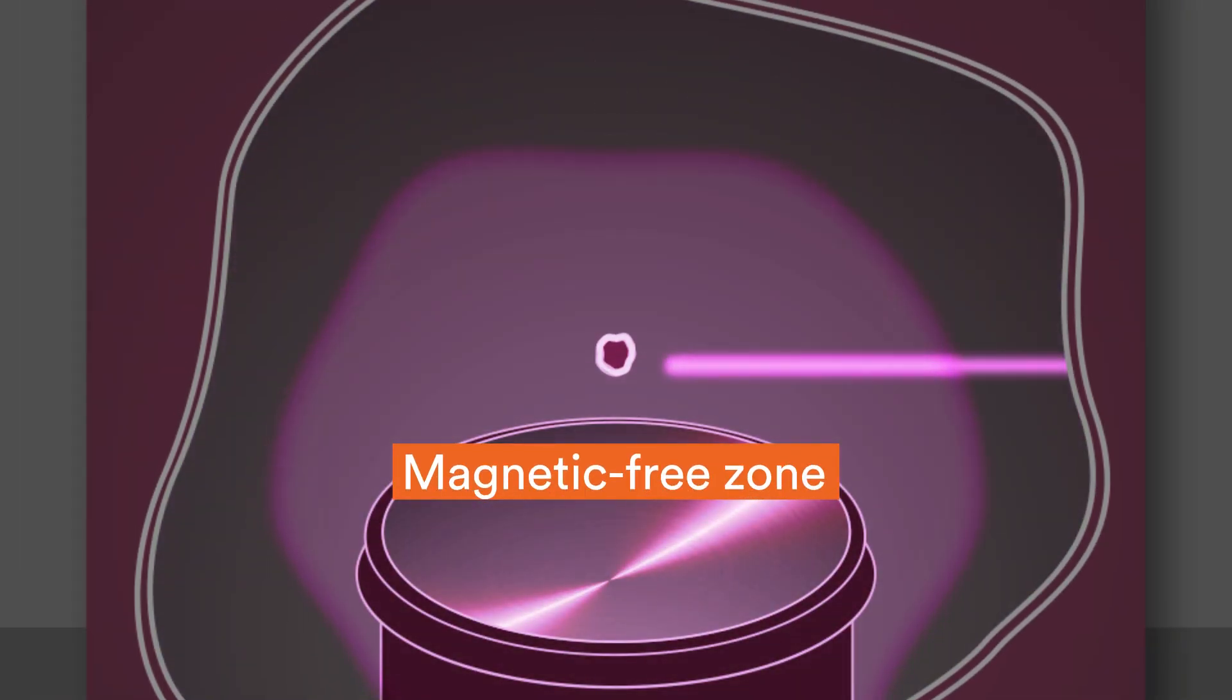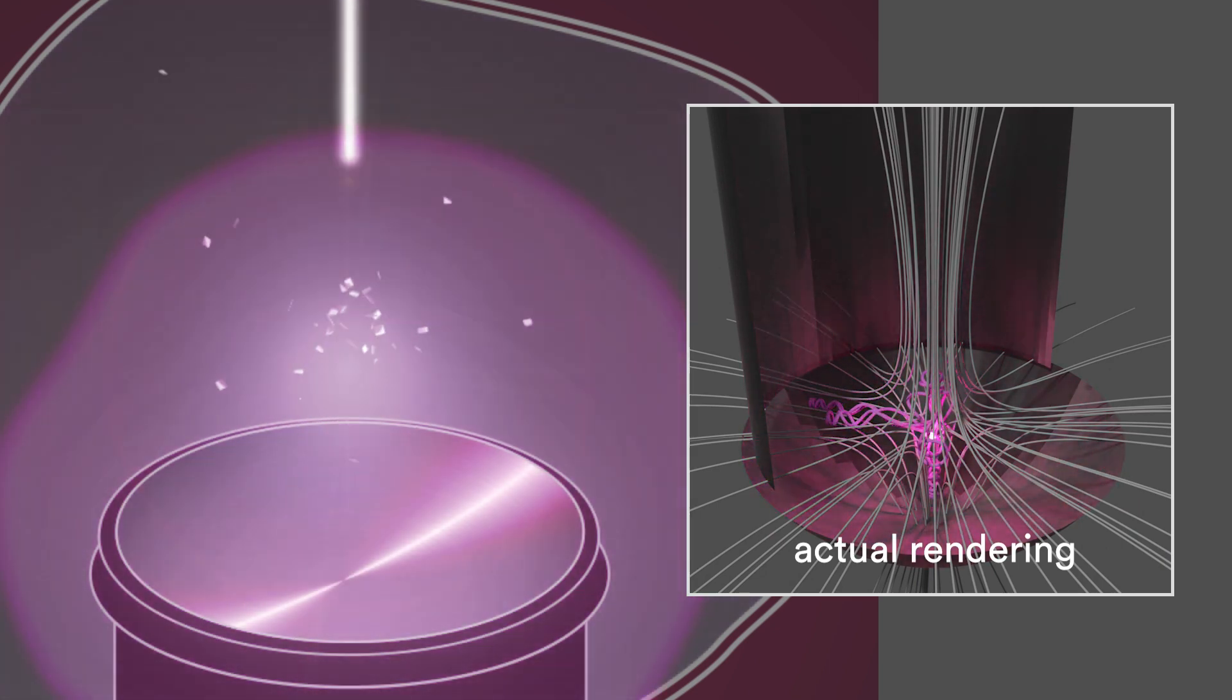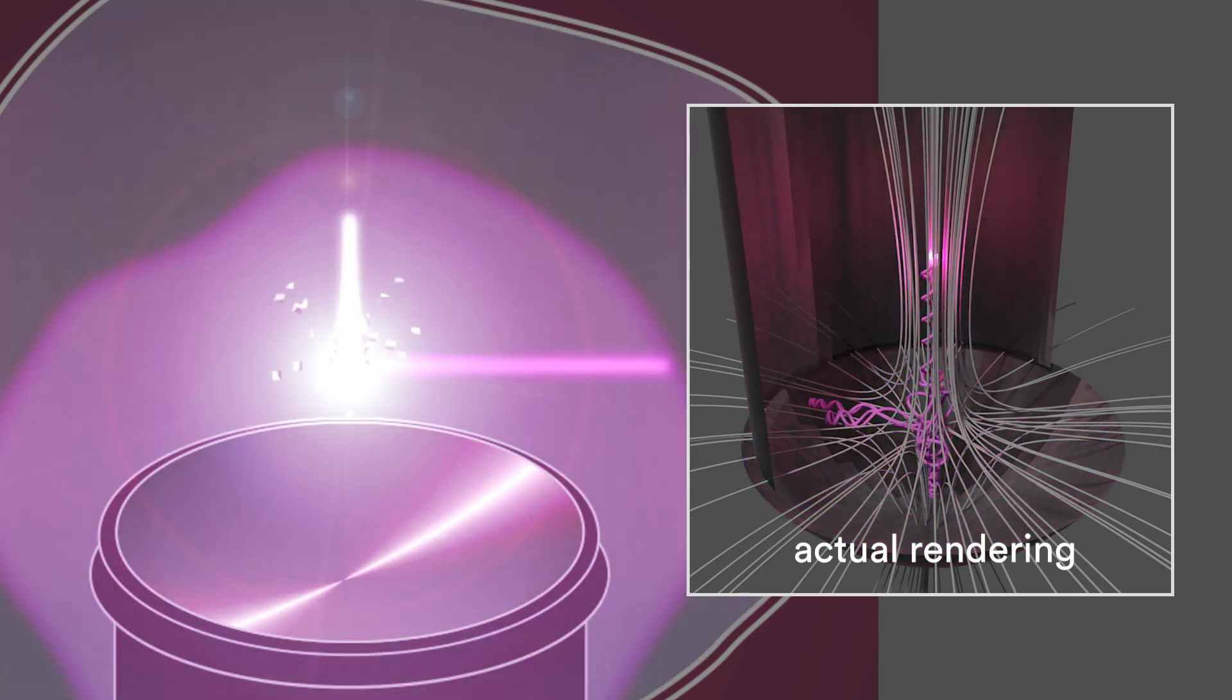We developed a way to protect this mirror from the tin particles by creating a magnetic-free zone, an area where all magnetic fields cancel each other out. This will guide particles away from the reflective surfaces.